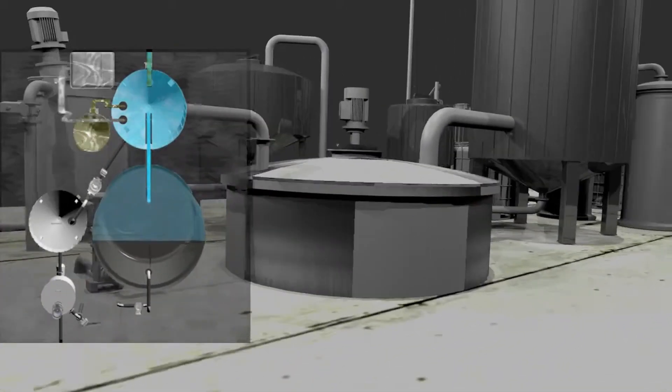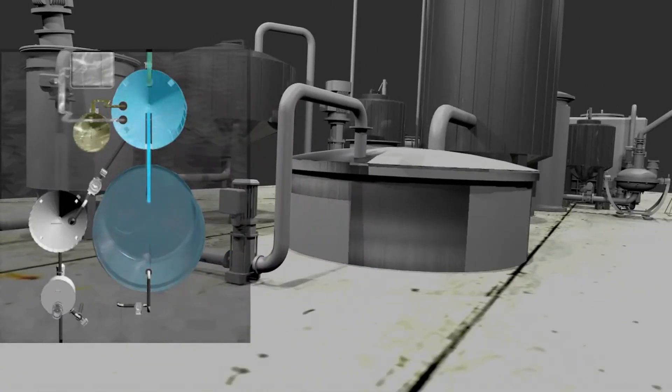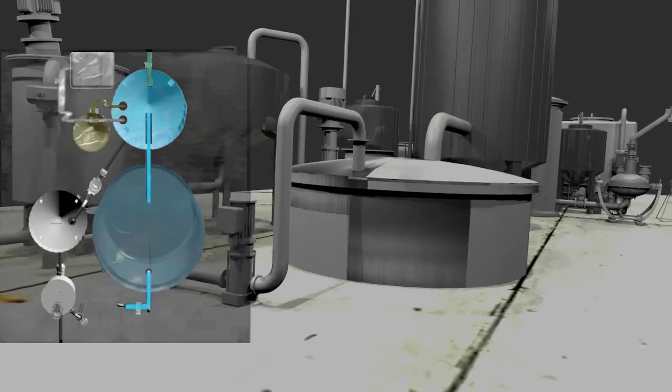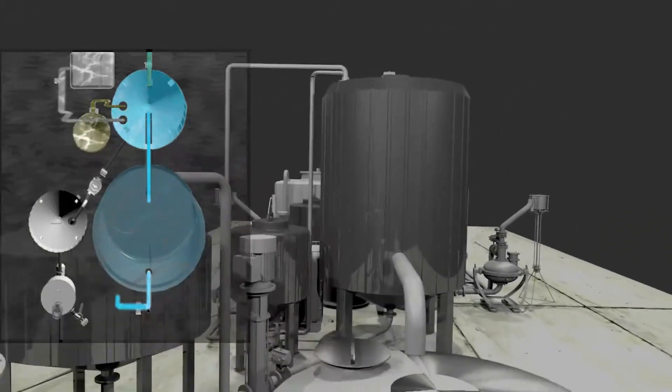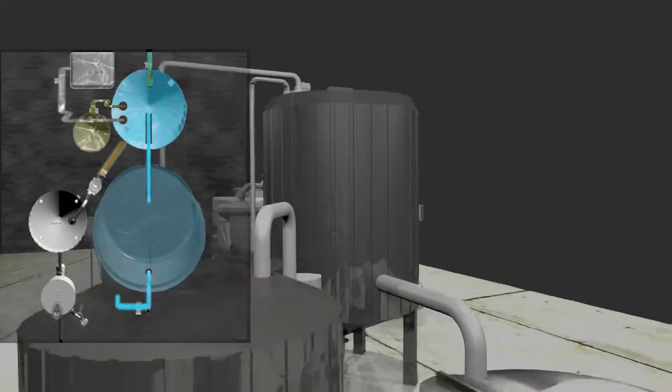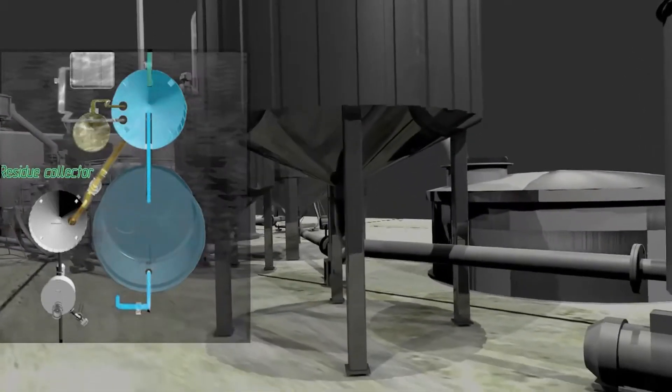After the sump, the sludge enters the sludge collection tank. Next, it is dehydrated at vacuum filters and then it is taken out to certain locations or for processing.